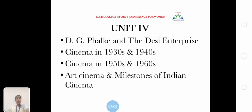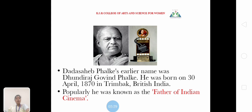Now, unit 4. We have 4 topics in unit 4: Dadasaheb Phalke and Desi Enterprise, cinema in the 1930s to 1940s, cinema in the 1950s and 1960s, and art cinema and milestones of Indian cinema.